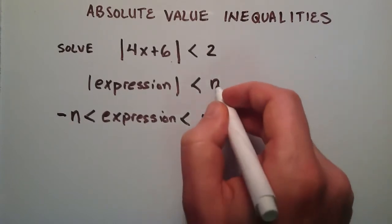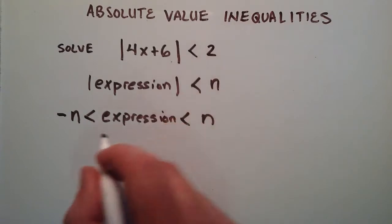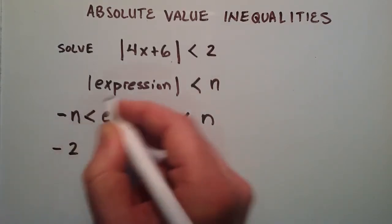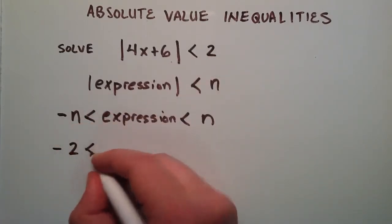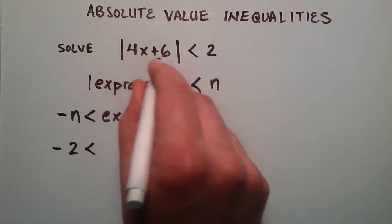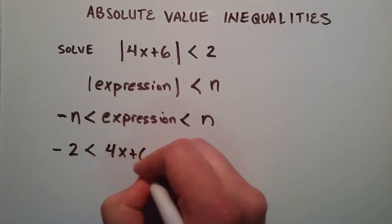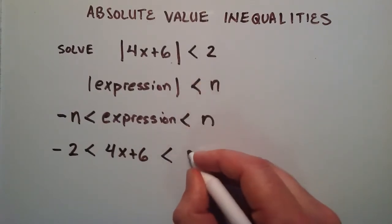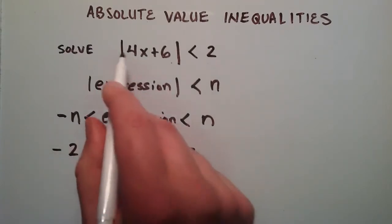Our n equals 2 in this example, so we can replace this solution with negative 2, since n equals 2. So negative 2 is less than our expression, which was 4x plus 6, and that's less than n, which is 2. This is how we start the solution to this absolute value inequality.